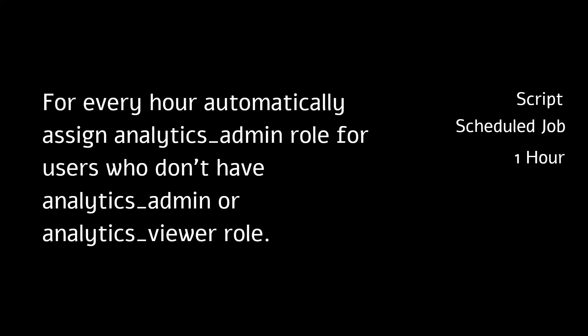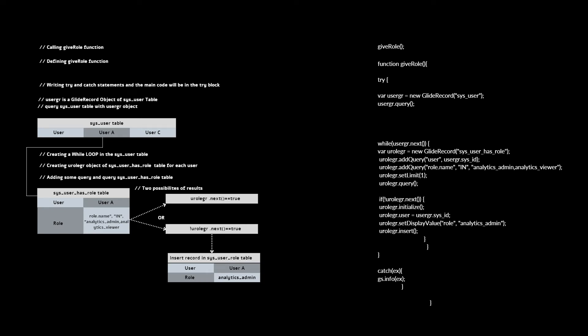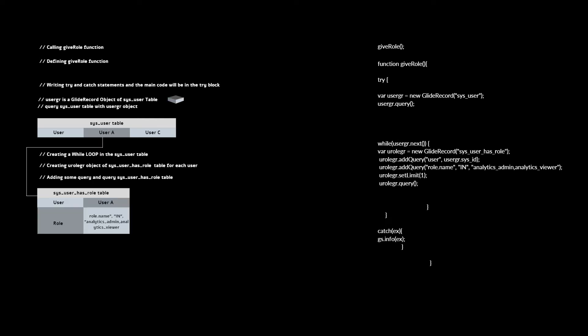Now let's take a closer look at the code and understand it step by step. The first thing we do is call a function called give role. We then define that function, and inside it we have a try-and-catch statement, which is mainly used to catch any errors. The main code lives in the try block. The first thing we do there is create a GlideRecord object on the sys_user table and query it. Then we have a while loop, and for each user we create another GlideRecord object on the sys_user_has_role table.